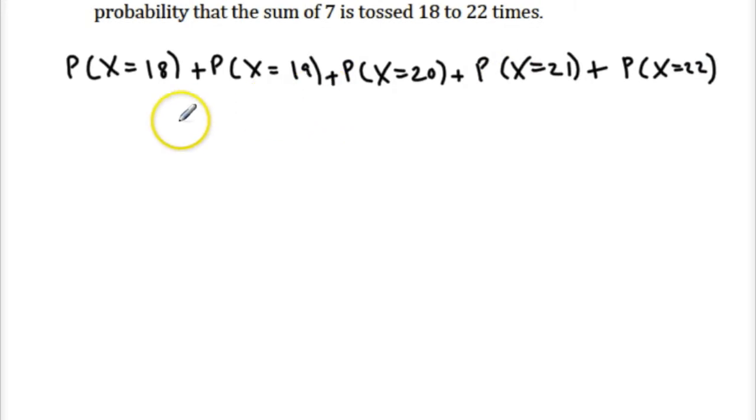That's one way of doing it, but there's a more elegant way. We can also just do the probability of X is less than or equal to 22, so that would be from zero all the way to 22, subtracting the probability up to including 17. We can use the calculator to help us do both of these, but what you need to realize is that this is equivalent.